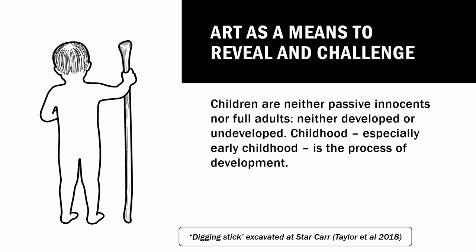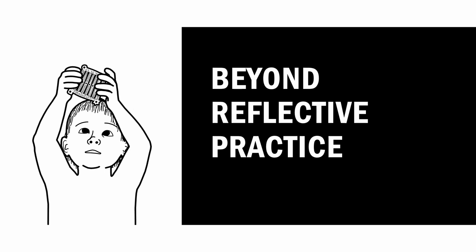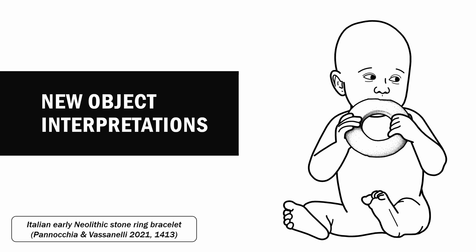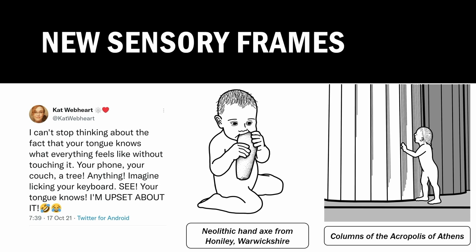Art can be used as a means to reveal and challenge our preconceived notions around childhood — that children are neither developed nor undeveloped, but are in a process of development. It leads us to further questions about childhood development, youth lives, emotion, cooperation, and the relationship to work, play, and learning. Beyond a merely reflective practice, it can help us to new interpretations: new object interpretations like seeing a stone bracelet as a possible teething tool, new object functionalities like the spouted vessel used as a water toy that looks like it's peeing — which if you're three is the funniest thing possible — or new sensory frameworks, like how mouthfeel is incredibly important to childhood experiences of objects and informs our sensory capacity into adulthood.